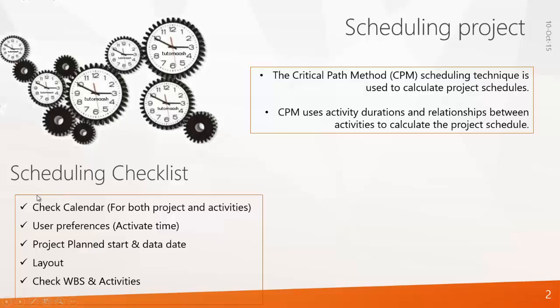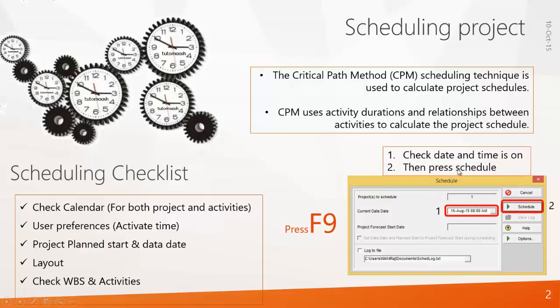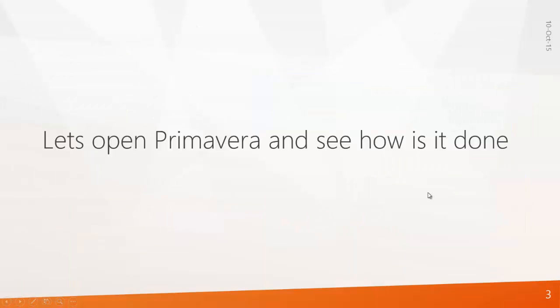Once you have done with the checklist, press F9 in the software and you will get this window. Check the date and time is on and then press schedule. Alright, let's begin Primavera and see how it is done.